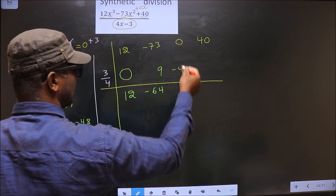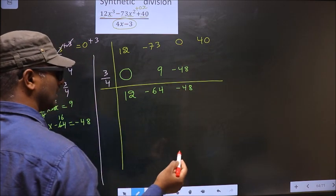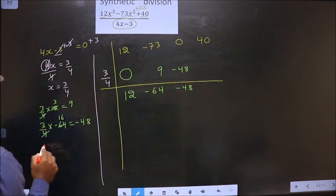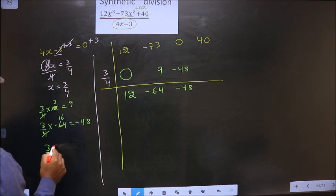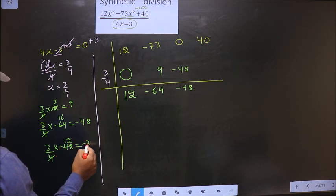We get minus 48. Now add these 2. We get minus 48. Now you should multiply these 2 and write here. That is 3 by 4 into minus 48.